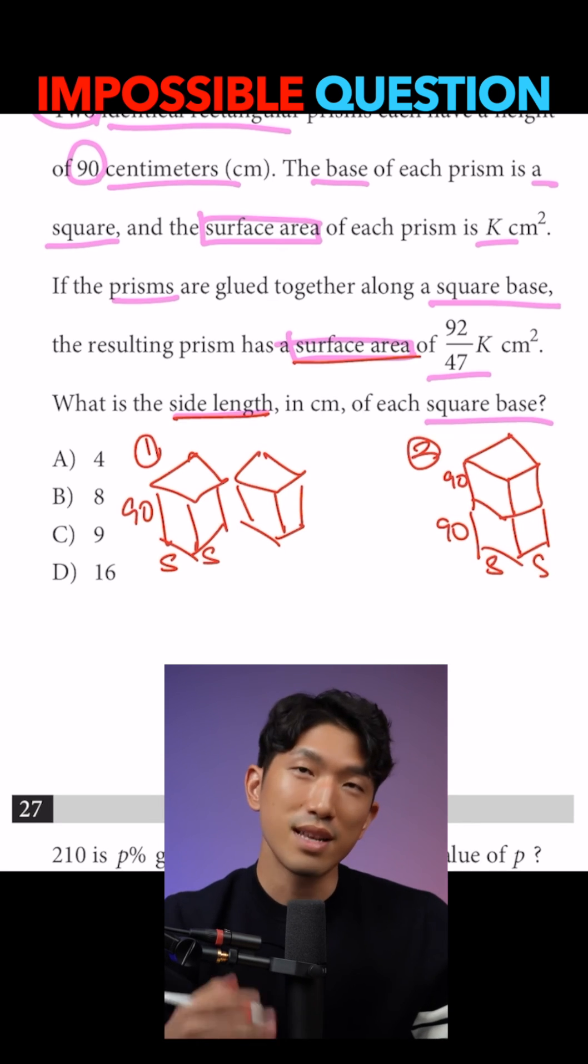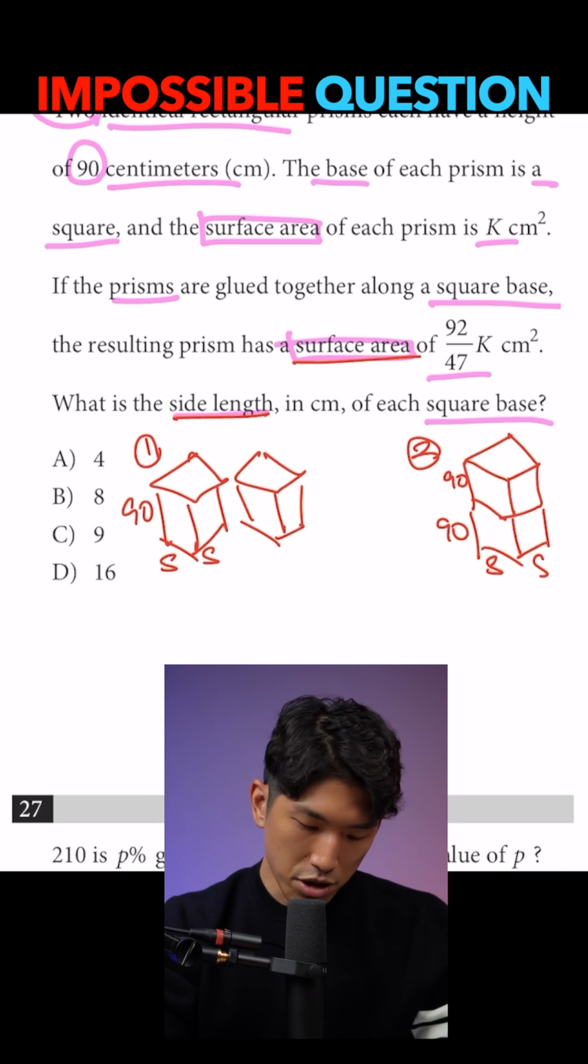And because you're talking about surface area, let's start there and see where it goes. So the surface area for a rectangular prism is going to be made up of the base at the bottom and base at the top.